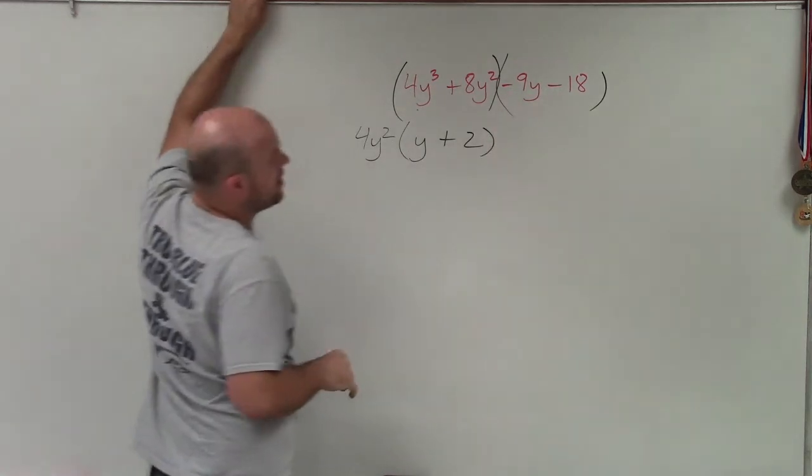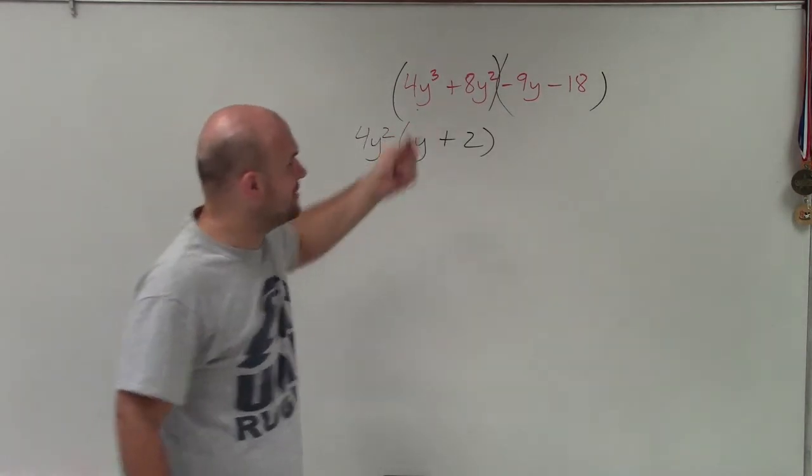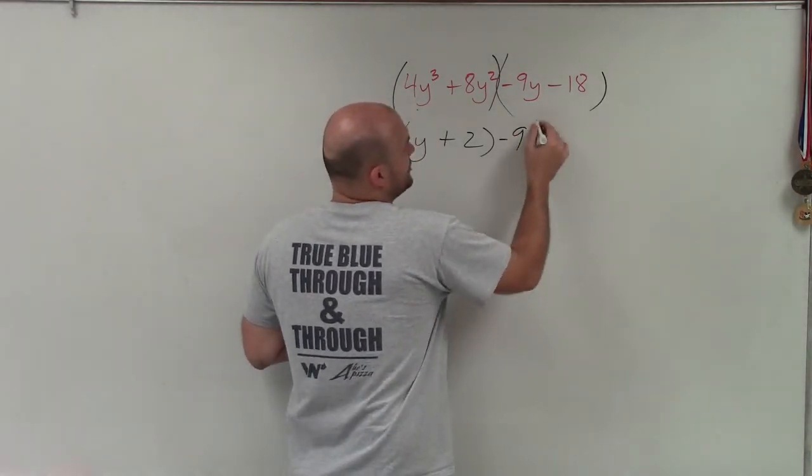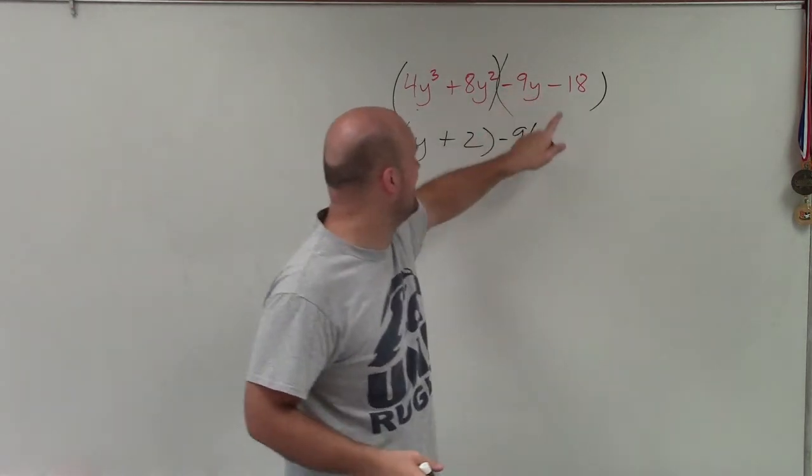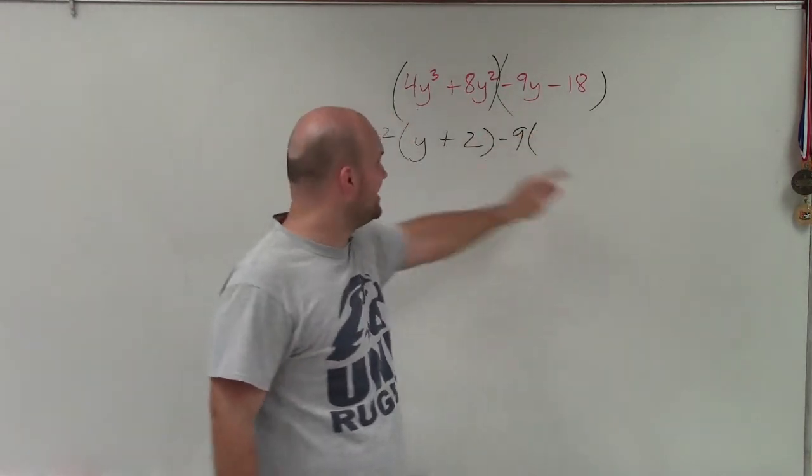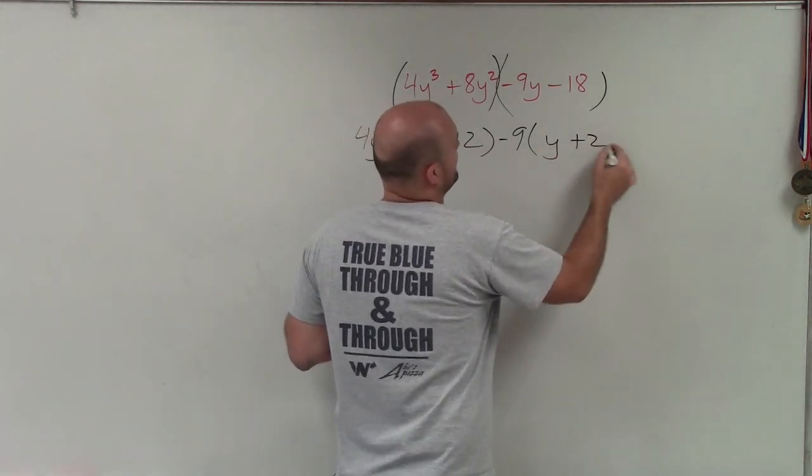Then I go and look here and I say, all right, what is my common factor here? Again, what we want to do is we want to get the same expression as y plus 2. So I'm going to factor out a negative 9. You could factor out just a 9, but then you would have negative y minus 2. And we want to get that same expression as y plus 2. So that's why I factor out a negative 9, and I'm left with y plus 2.